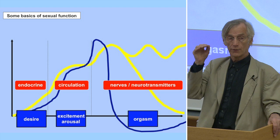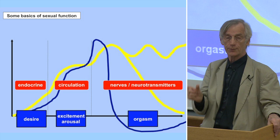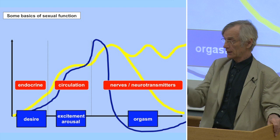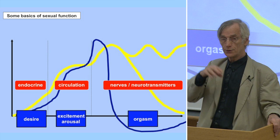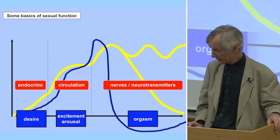This is important especially when you look at sexual function from a medical perspective — what diseases are doing and what medical interventions are doing. You can say that desire is especially connected to hormones; arousal — erection and lubrication — is an effect of circulation; and the third phase requires that the neurologic system and neurotransmitters are intact. It is a simplification, but it sometimes helps very much to understand things.